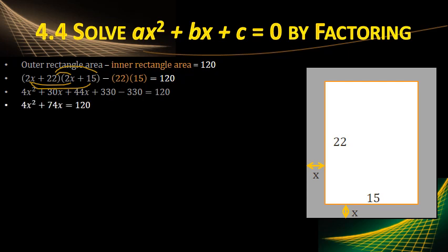Collect like terms. The 330's cancel out, and 30x and 44x gives us 74x. Let's make it equal to 0. So we subtract the 120. Then factor.